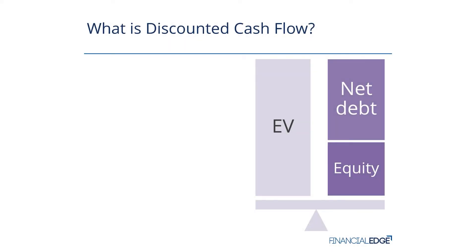In helping us answer the question 'what is discounted cash flow,' we start off by looking at the EV equity bridge. We can see that if we took EV minus net debt we'd get to equity, or alternatively, equity plus net debt equals EV. So EV minus debt equals equity — but how do you actually calculate that enterprise value? Well, we could use multiples such as trading comps, or we could use a discounted cash flow — a DCF.